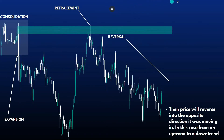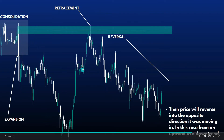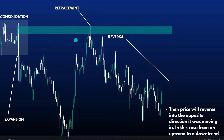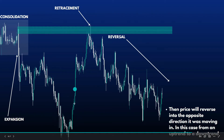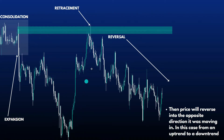The final part of the trade setup is the reversal. We have our consolidation, our expansion which creates imbalance, our retracement which fills in the imbalance back up to our order block, and then the reversal. As the retracement is happening, it should create liquidity for the reversal to take out.